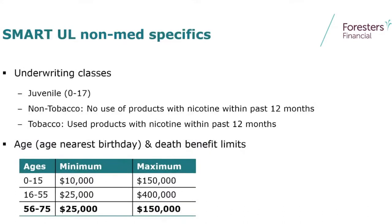Our underwriting will go up to $400,000 through age 55. So if you've got a client who says, 'I want a permanent product, I don't want to go through medical, I don't have the time' — whatever the reason is — we can get up to $400,000 through age 55.